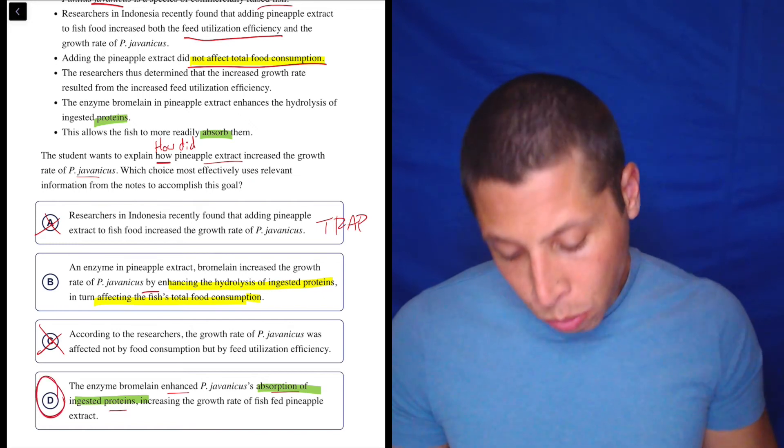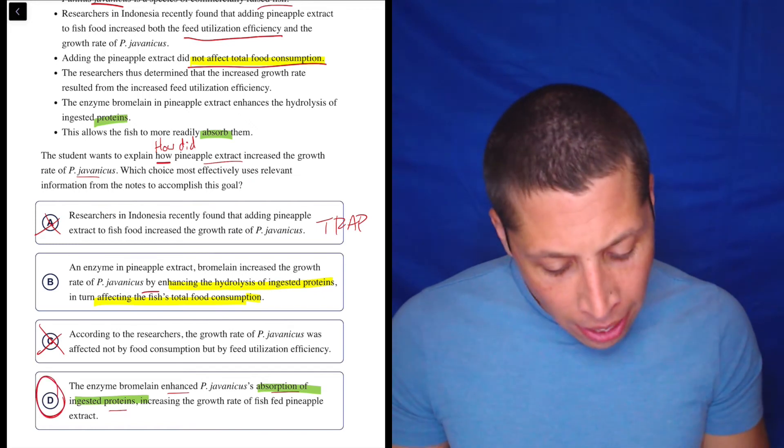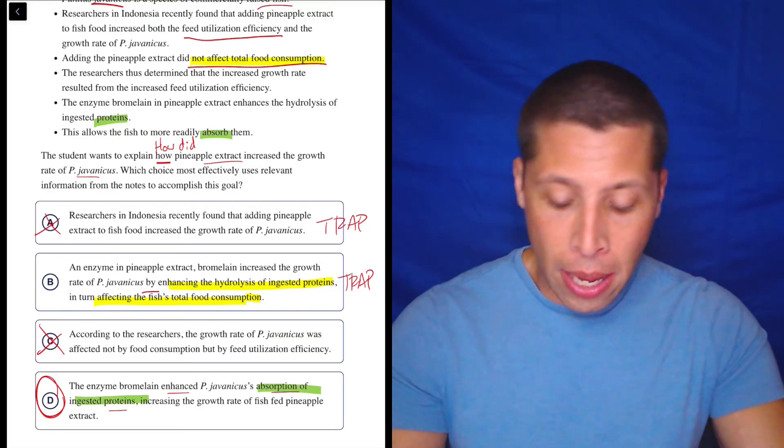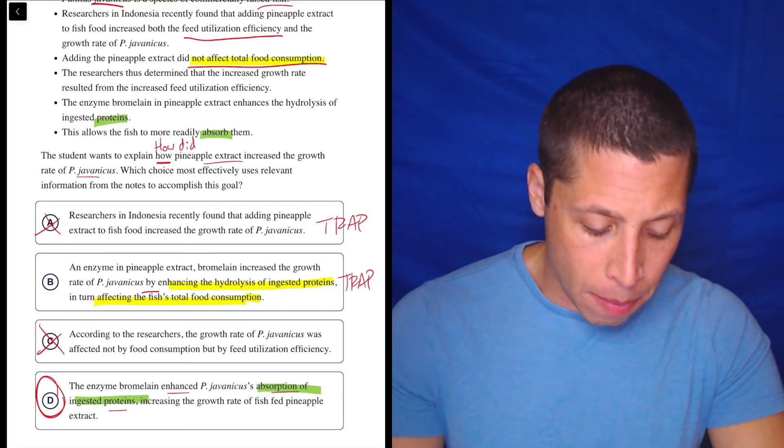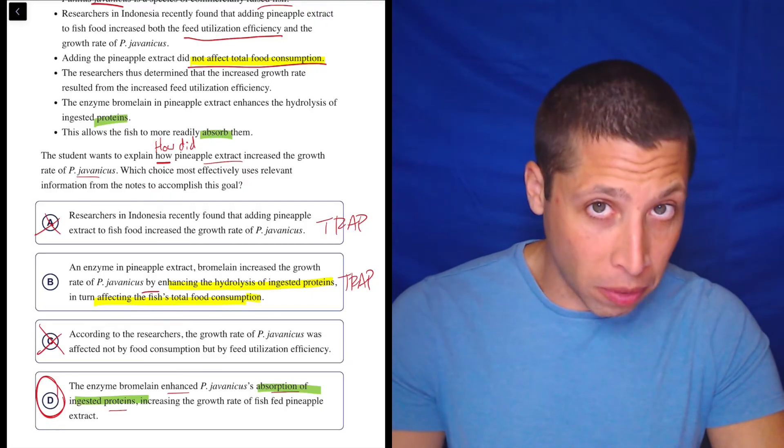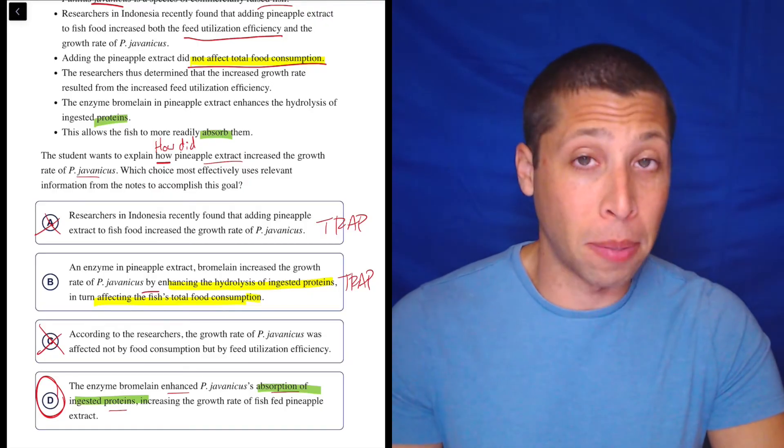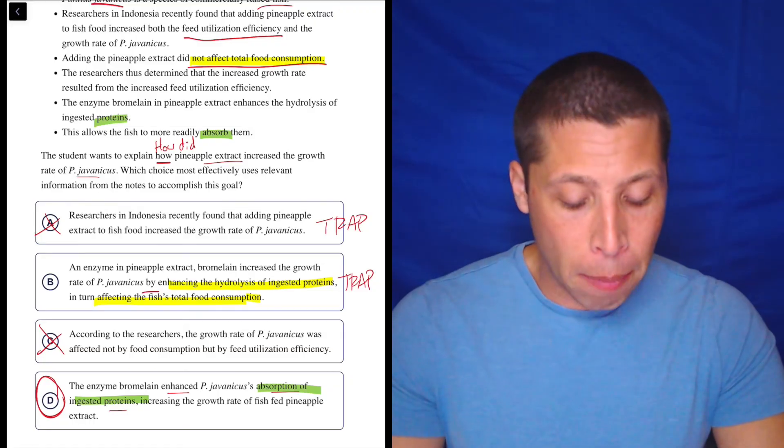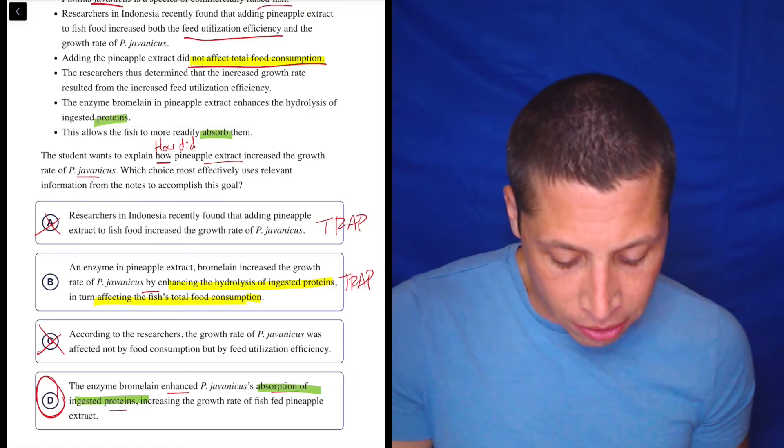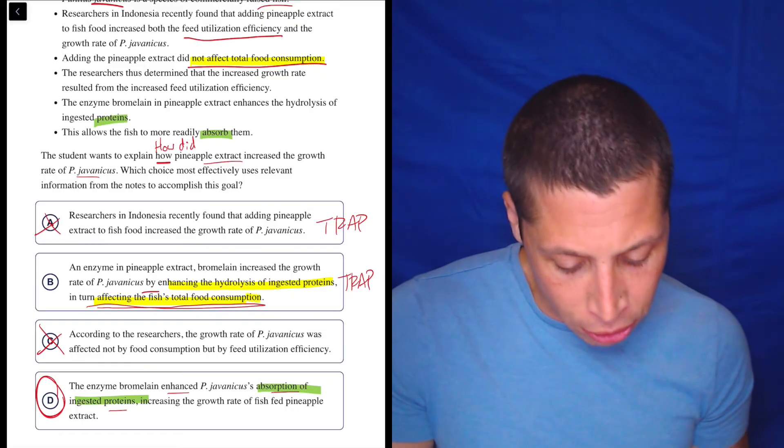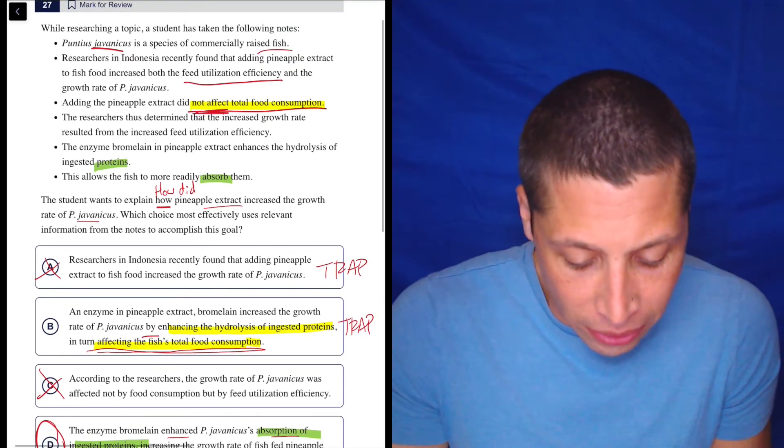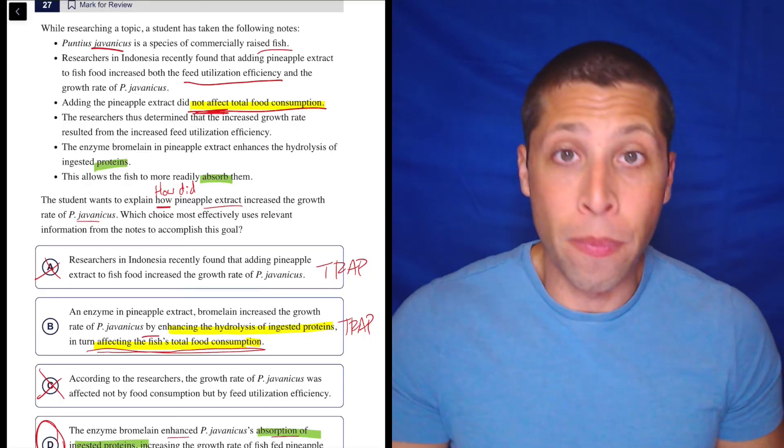This is one of the hardest one of these I've ever seen. And I get why this is a trap too. Obviously, it's close. They do have a kind of how here. But it's not good enough because it is doing a little bit of a copy-paste trap. It's using these complicated science words to try to lure us in and be like, oh, they're repeating the same thing. But it also says something that is just untrue. It is, in turn, affecting the fish's total food consumption. Well, it specifically says it does not do that.